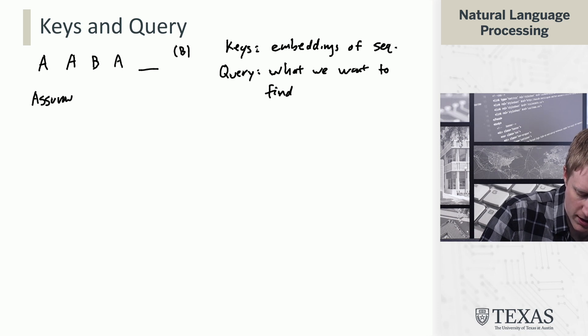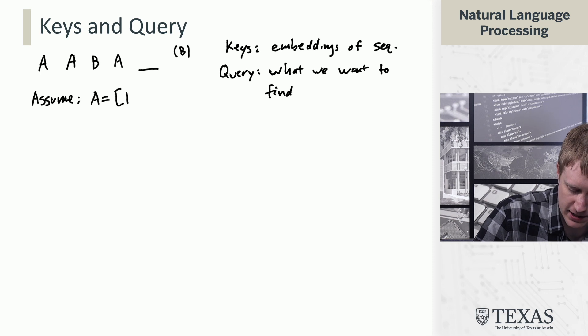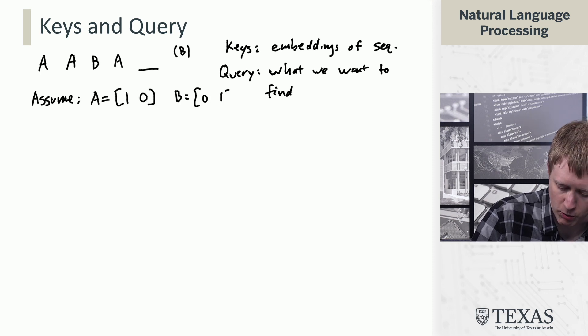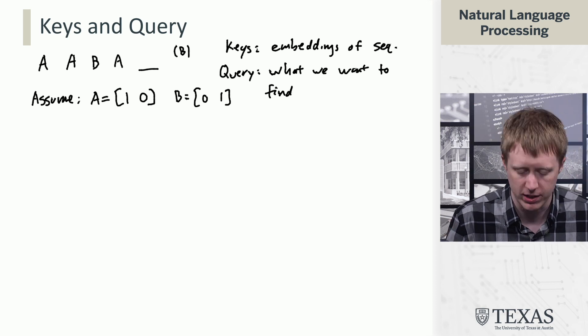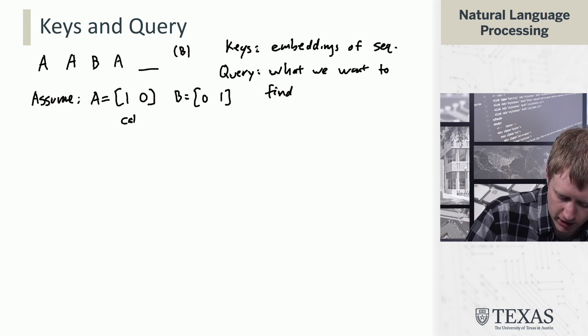Okay, so in terms of embeddings, we're going to assume the following word embeddings. That A has the embedding [1,0] and B has the embedding [0,1]. So these are just one-hot encodings of these, and we're going to call them E_i.